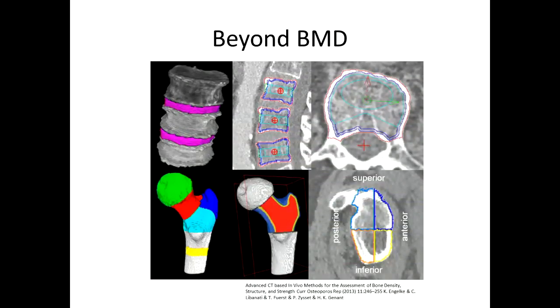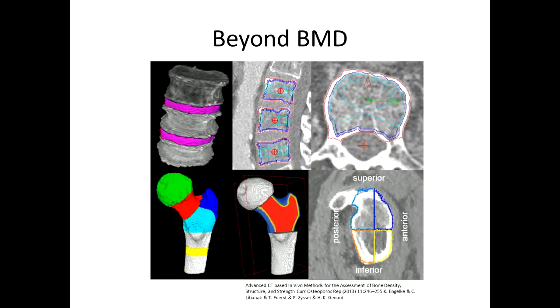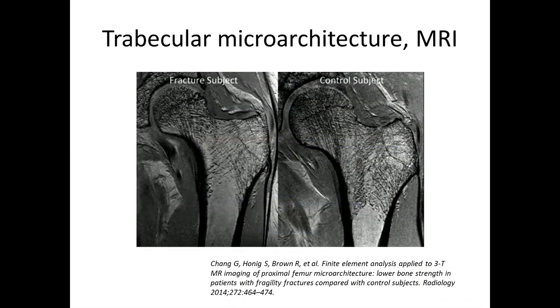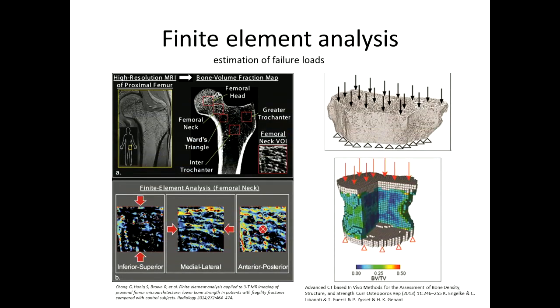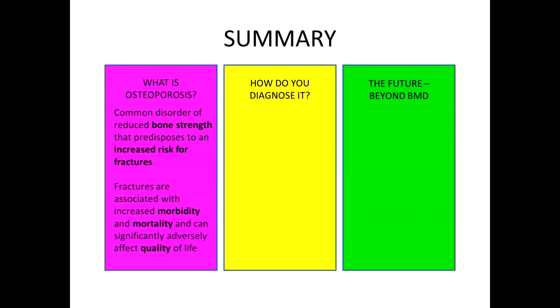What about the future? Bone mineral density only accounts for a portion of bone strength, and there are many novel techniques looking at bone quality. Trabecular microarchitecture and bone porosity have been studied using MRI to assess bone quality, and finite element analysis has been used to estimate the strength of bone and failure loads. These are only a few of the many exciting things being done in imaging to assess bone strength.